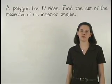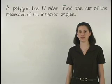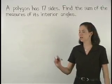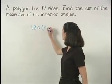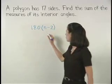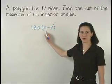Remember that the formula for finding the sum of the measures of the interior angles of a polygon is 180 times n minus 2, where n represents the number of sides.